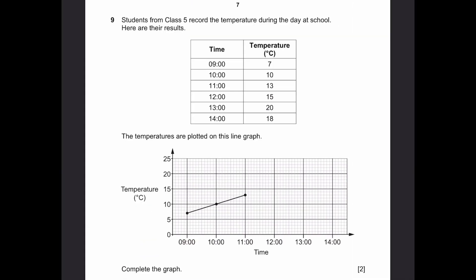Question 9. Students from Class 5 record the temperature during the day at school. Here are the results. The time and temperature according to the time is given. The temperatures are plotted on the line graph. Complete the graph. So we can plot the points. 9 o'clock 7, 10 o'clock 10, 11 o'clock 13, all are given. Now 12 o'clock 15. Next is 13 o'clock or 1 o'clock technically, 20. 14 o'clock, which is technically 2 o'clock p.m. Now we can connect the points like this. And that's the answer.